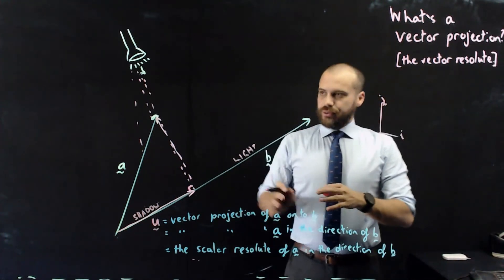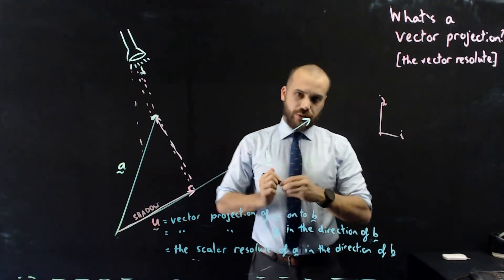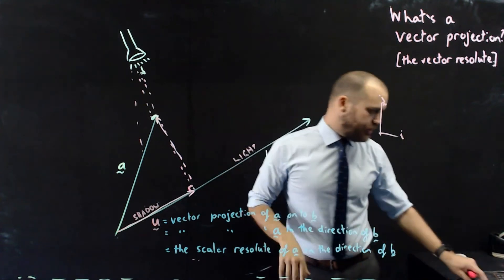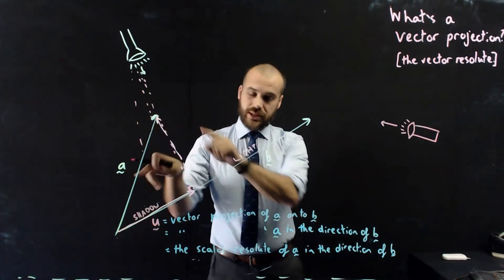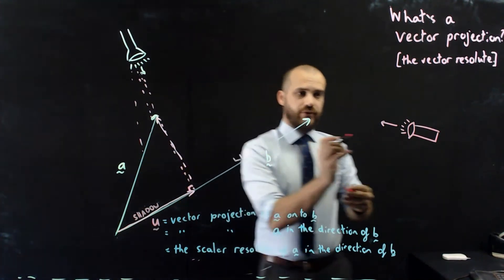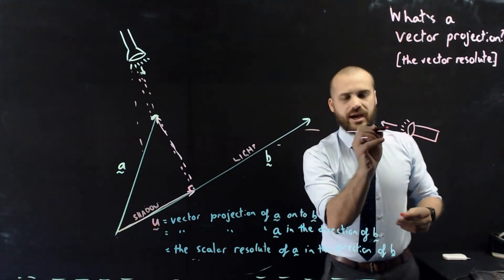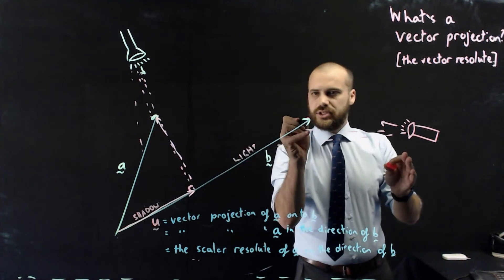Now, of course, I've been projecting A onto B, but I could also put a torch somewhere else and go the opposite way. So here's another torch that I've drawn, and that torch is perpendicular to A. So if I were to draw that torch, you can see that the light hits that, the light hits that, and then the light passes by vector B in this direction here.